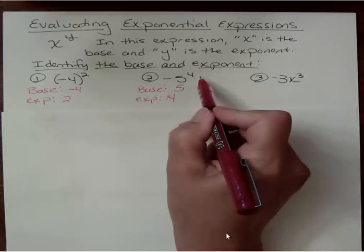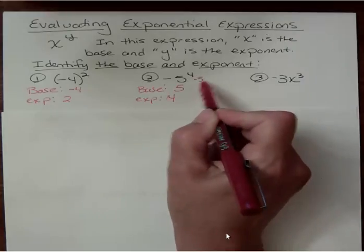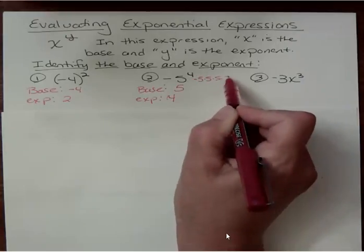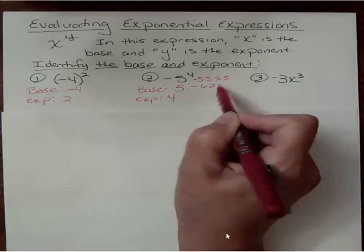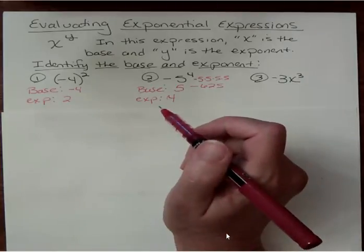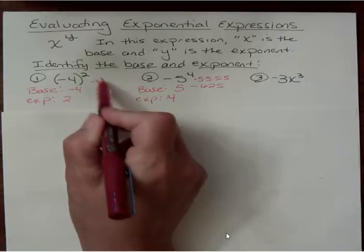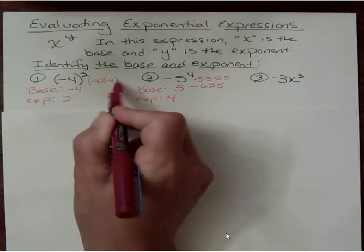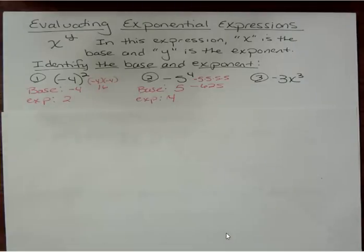This looks like negative 5 times 5 times 5 times 5. Negative 625, because that negative doesn't repeat. It's just one time out in front. This one looks like negative 4 times negative 4, which is positive 16. That negative does repeat.